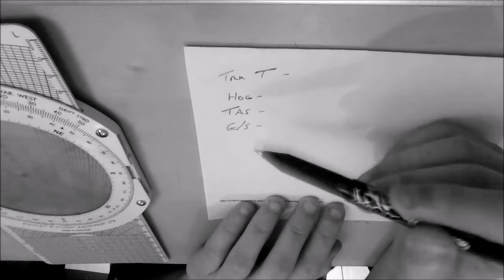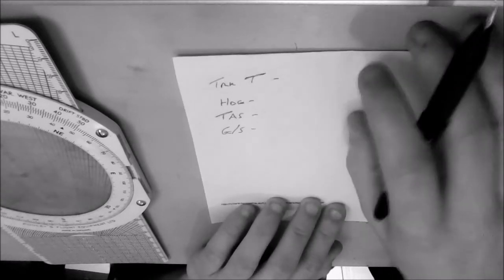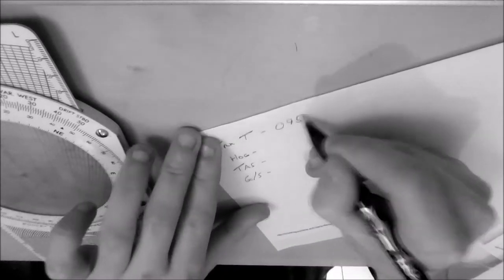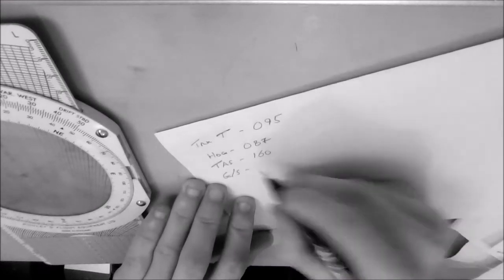So you need your true track, you need your heading, you need your TAS, and you need your ground speed. So we know that our true track is 095, our TAS is 160, our heading is 087, and our ground speed is 130 knots.